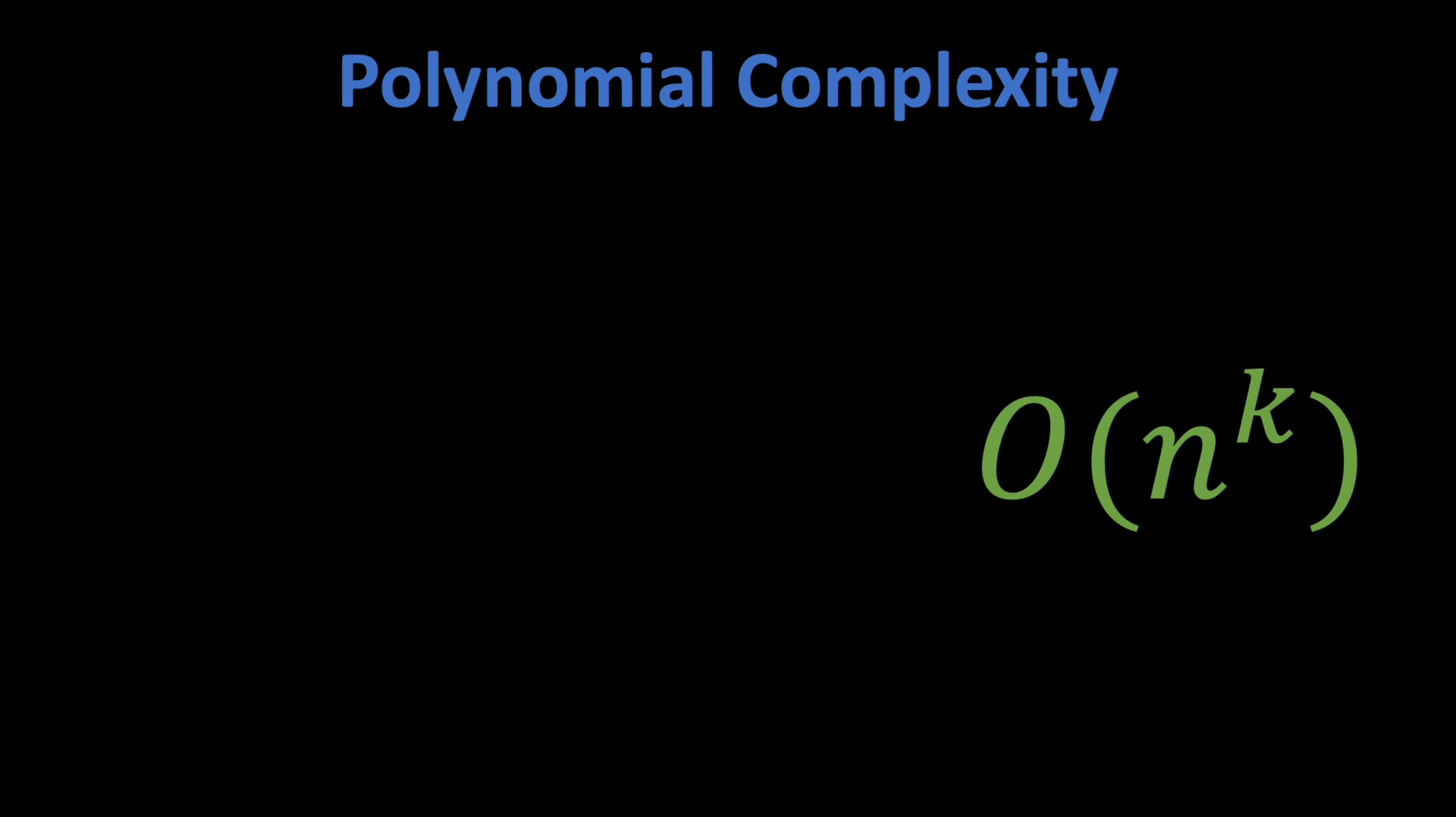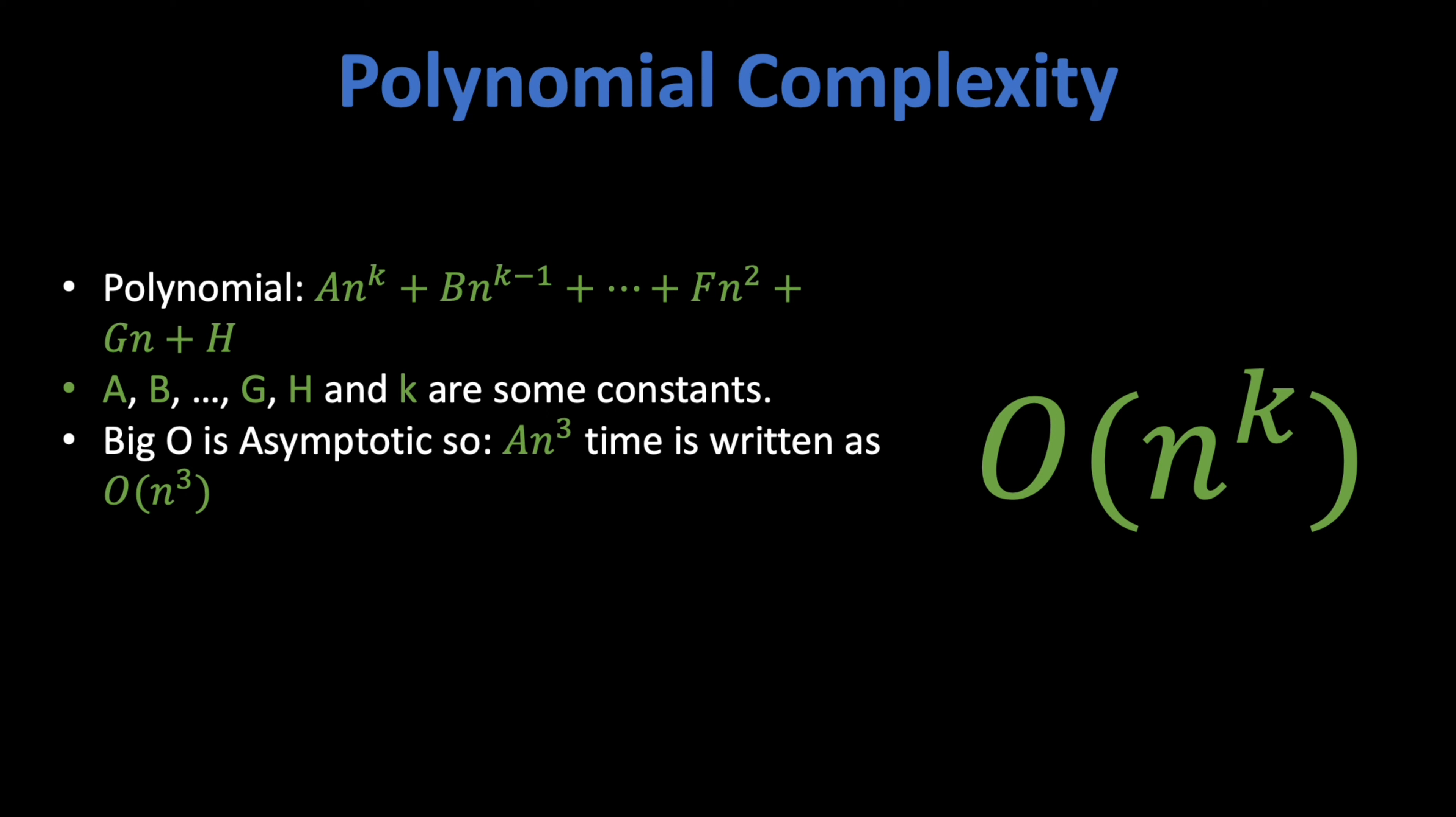Polynomial complexity O(n^k). If an algorithm takes n to the power of k time where k is a constant, it has polynomial time complexity. Let me remind you that a polynomial takes the form of ax^n + bx^(n-1) + ... where a, b, g, h are some constants. Remember that big O notation is asymptotic. So if an algorithm takes 8 times n cubed plus n amount of time, we simply denote it as O(n^3).